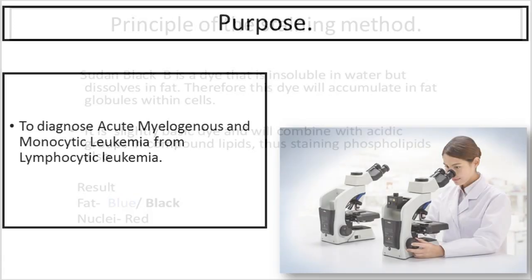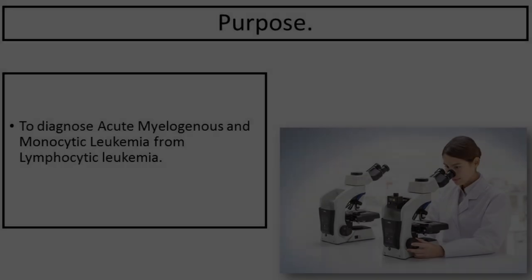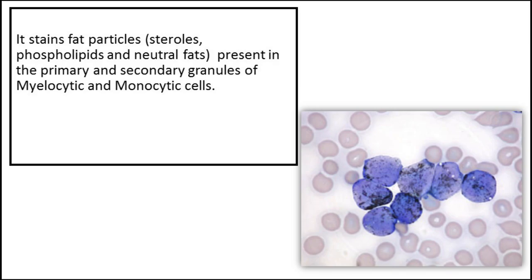The purpose of using this staining method: Sudan Black B is used to diagnose acute myelogenous and monocytic leukemia from lymphocytic leukemia. It stains fat particles present in the primary and secondary granules of myelocytic and monocytic cells.